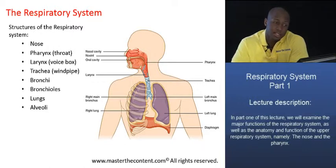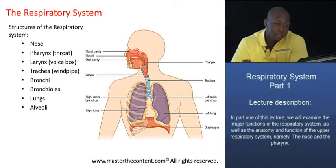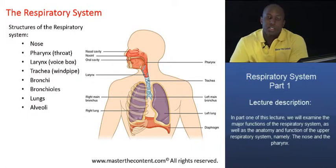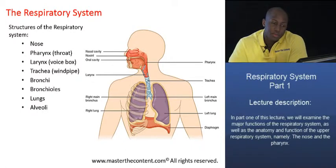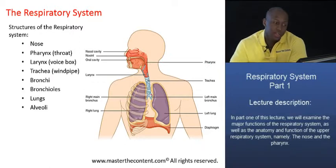As you can see, they're very nicely depicted in the diagram we have to the right of the screen right there. So the nose is basically comprised of external and internal portions. Through the nose, we have a cavity we refer to as a nasal cavity that opens — which is also part of the nose, the internal nose — into the pharynx, the second structure right there.